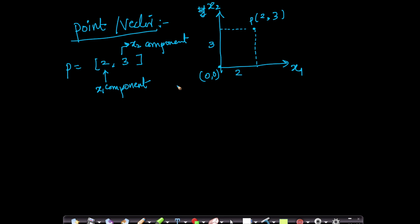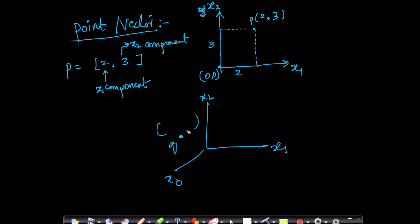What if I want to represent a point in three-dimensional space? I have x1, x2, and x3 axes. Suppose there is a point Q. That point Q can be represented using a vector of size 3. Let us say it is 2 units away on x1, 3 units on x2, and 5 units on x3. A three-dimensional point is represented with a vector of size 3, where each component corresponds to how far it is from the origin on that axis.